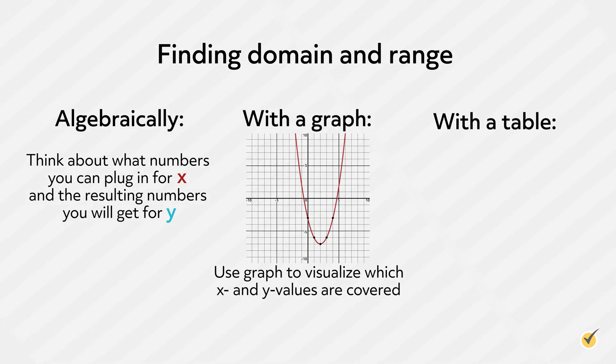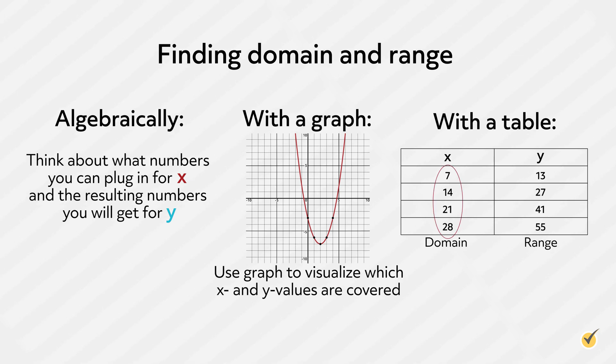Finally, if you are looking at a table, the domain is the list of numbers inputted for x, and the range is the list of numbers that are the outputs of those x inputs, the numbers in the y column. I hope this video on domain and range was helpful. Thanks for watching, and happy studying.